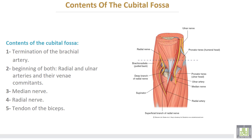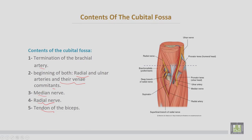The brachial artery terminates into the radial and ulnar arteries, along with their venae comitantes. The third structure is the median nerve, and in the lateral part there is the radial nerve, along with the tendon of the biceps muscle.